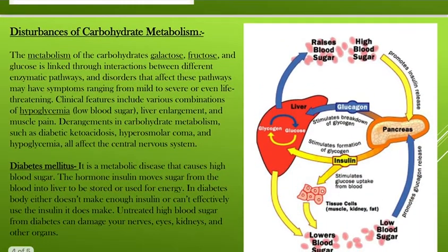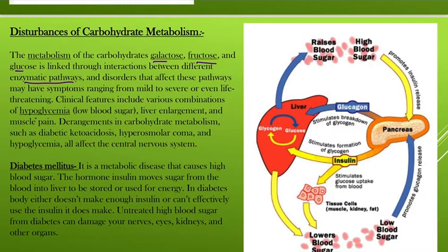Next are the disturbances of carbohydrate metabolism. The metabolism of galactose, fructose, and glucose are linked through interaction between defined enzymatic pathways. Disorders that affect these pathways have symptoms ranging from mild to severe cases, with clinical features like hypoglycemia (low blood sugar), liver enlargement, and muscle pain. Derangement in carbohydrate metabolism causes diabetic ketogenesis, where there is an increased amount of ketones in the body, and hyperosmolar coma with high blood sugar. Hypoglycemia also affects the central nervous system.